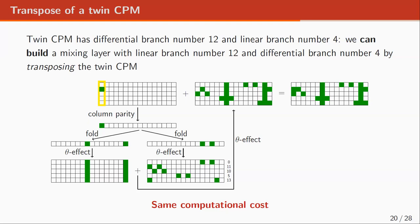So we have a twin CPM with a differential branch number of 12 and a linear branch number of 4. But we can also build a mixing layer with a linear branch number of 12 and a differential branch number of 4 by transposing the twin CPM. In the transposed version, we compute the column parity folded into two different theta effects, where one of them is shifted over different offsets; we add the two theta effects together and add to the input state. The transpose of the twin CPM has the same computational cost as the twin CPM, like ASCON.